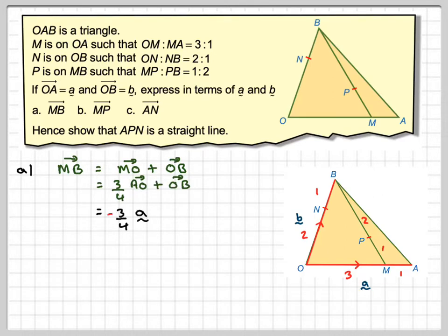So that's going to be minus 3 quarters of a—it's minus because you're going against the arrow—plus b. Normally we'll rewrite that as b minus 3 fourths of vector a. Don't forget to put the squiggly line underneath your vectors.